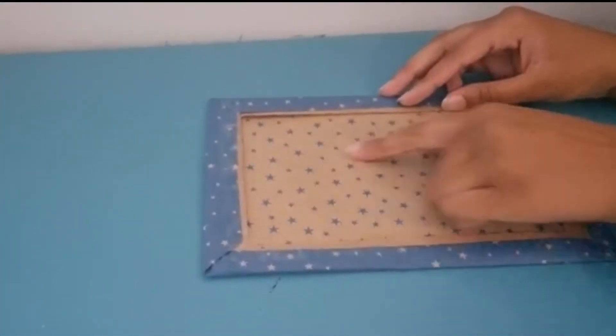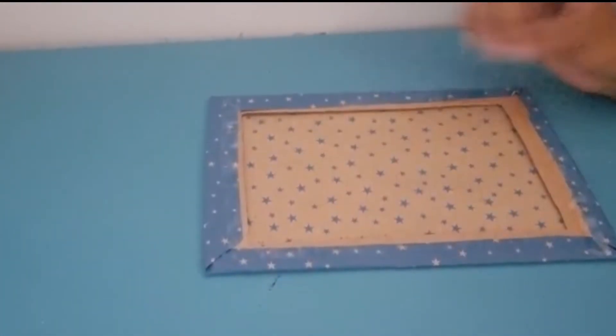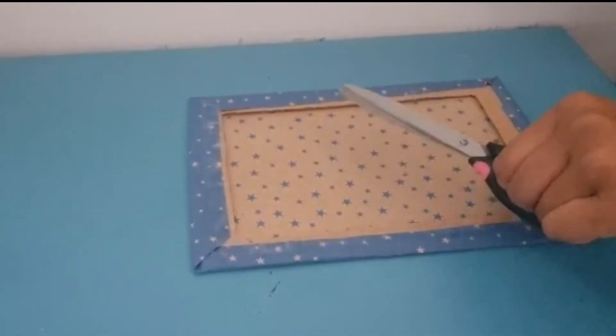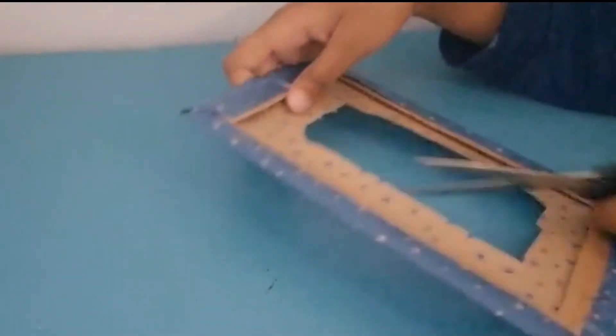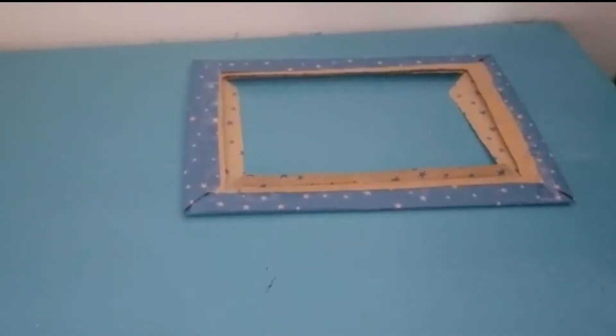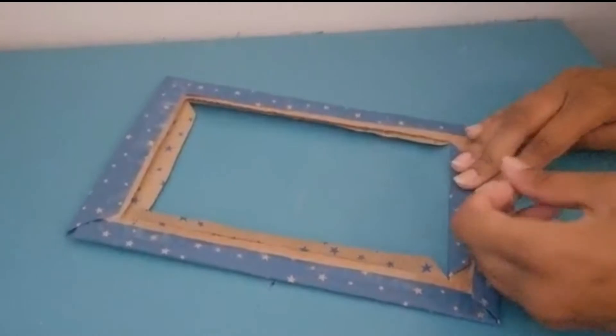This is an important step, so watch closely. Once your frame looks like this, cut out a little square and cut slits into the four corners and fold the edges like so. This gives it a neat look.